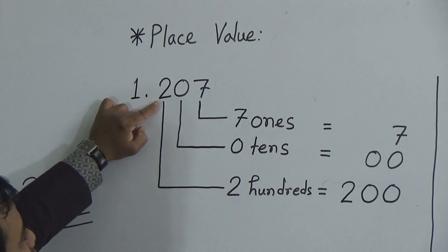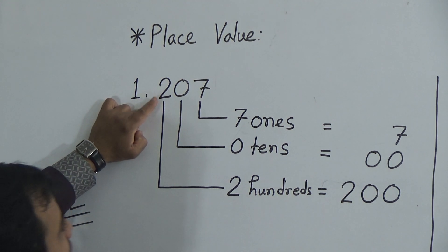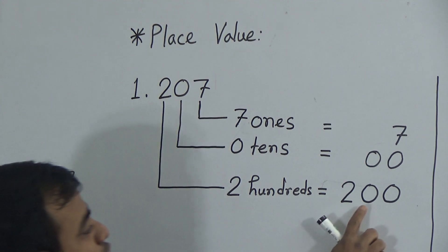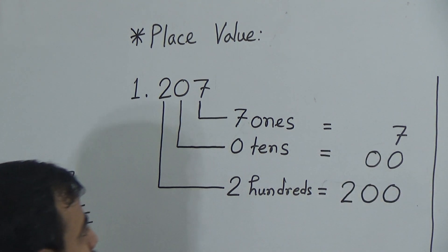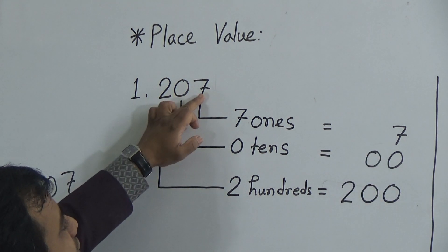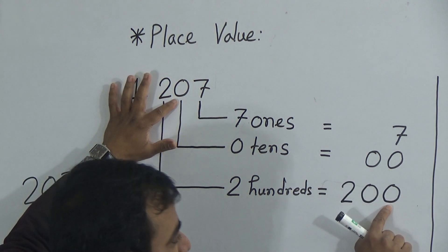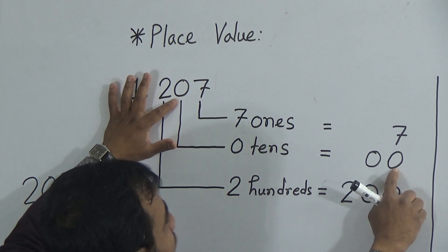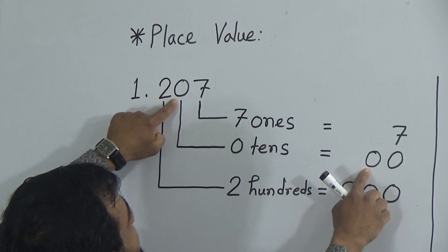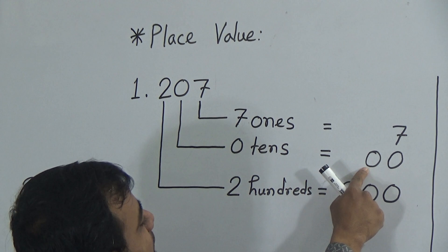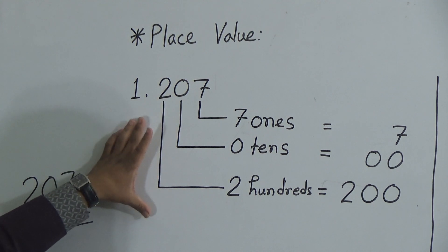Again, my dear students: 2 is in the 100's position. When you write down the number, write 200 — after 2 we have 2 digits, so we give 2 zeros. Then, for 0 tens, after this 0 there is only 1 digit, so we use 1 zero on the top. We write down 0 and that zero indicates this digit. This is the place value of the number 207.